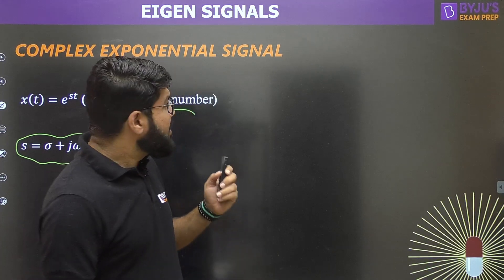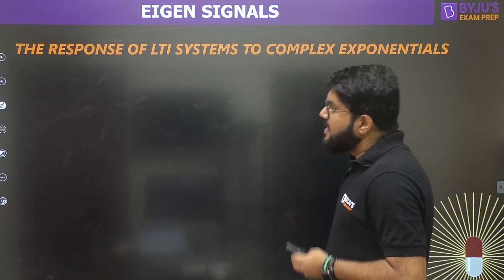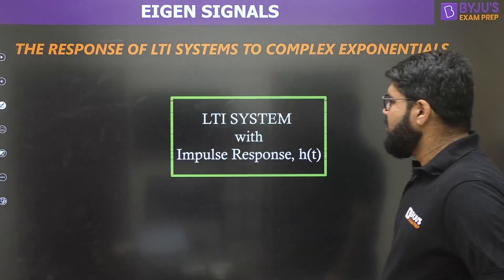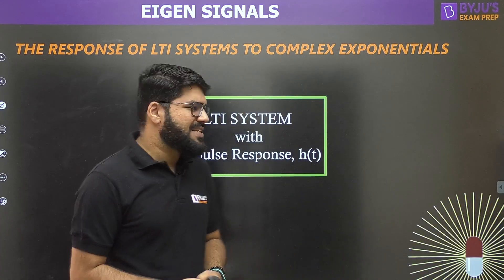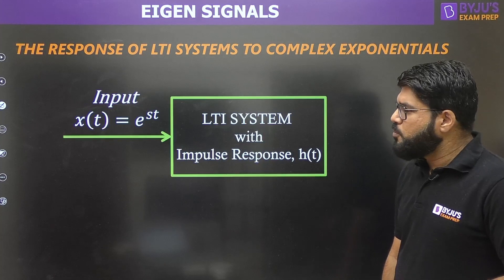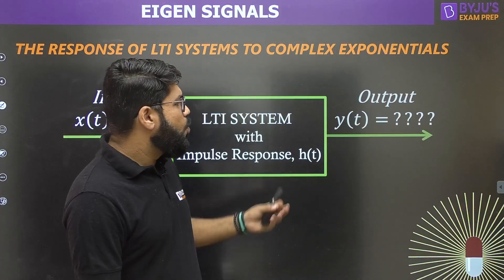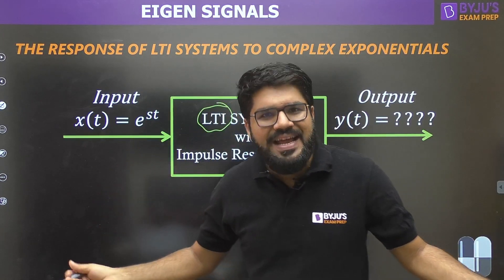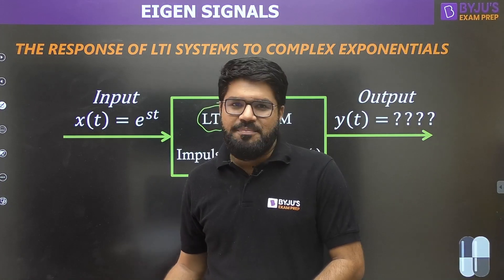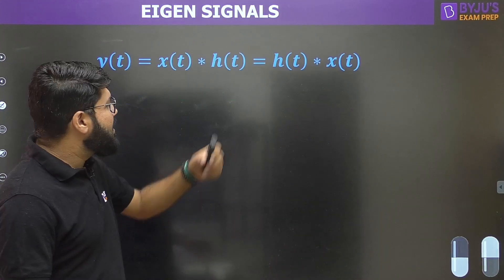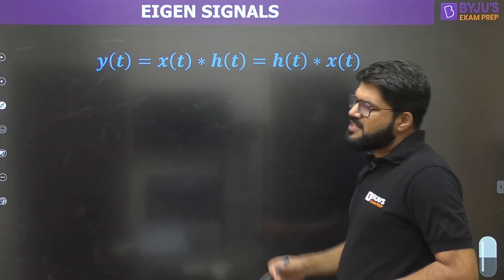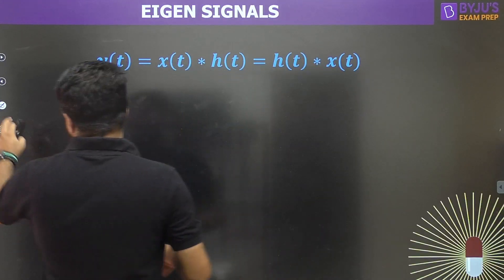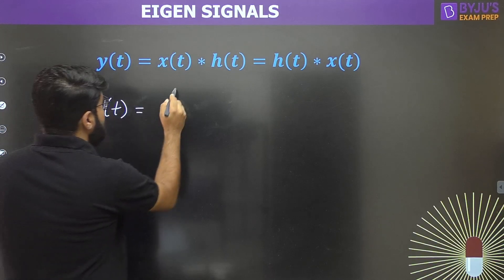To understand the importance of this, let us see what happens when I apply a complex exponential signal to an LTI system. Consider an LTI system with impulse response h(t). I apply the input x(t) = e^(st) and find the output y(t). Since it is an LTI system, the response is the convolution of the input with the impulse response: y(t) = x(t) * h(t).